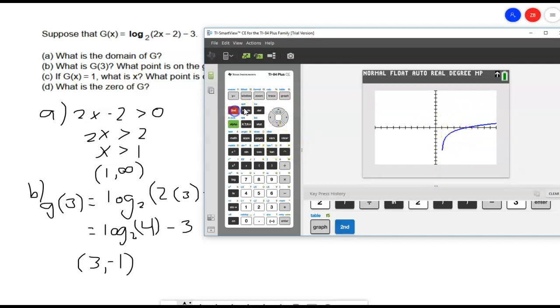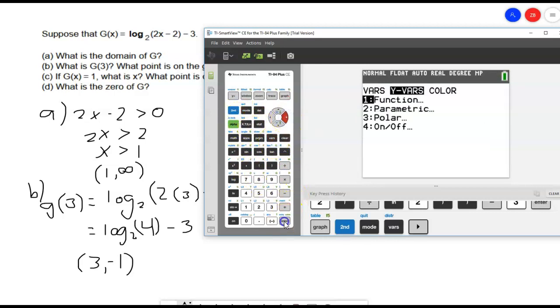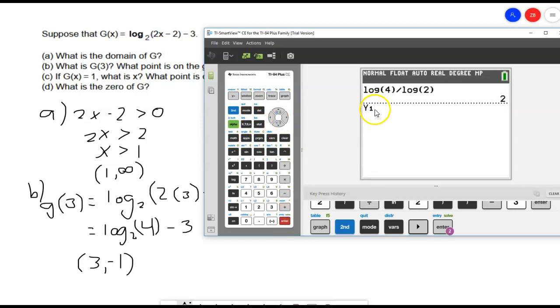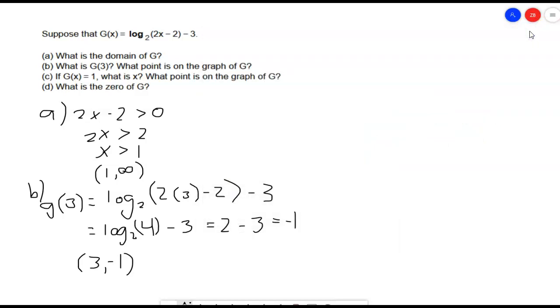And let's do one other thing this time. Let's pull up, go to vars, go to the y variables, pull up the y1. And that's where we put the function in. And we're going to say, evaluate that function at 3. And it should shoot us back a negative 1, which it does. So, that's another way to check it as well.